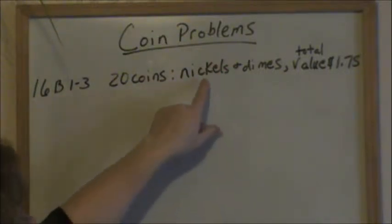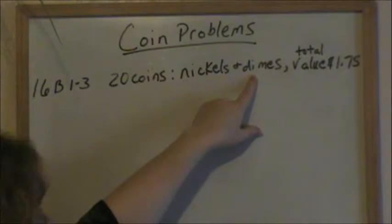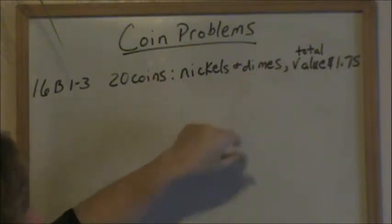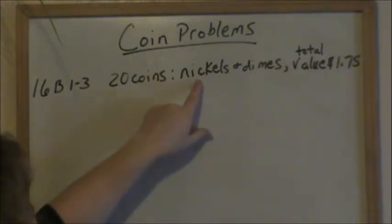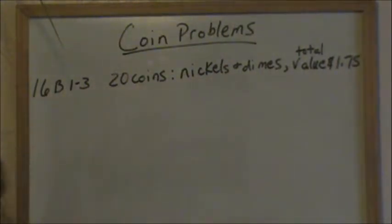Since we have two unknowns, how many equations do we have to have to solve two unknowns? We have to have two. So if there are two unknowns, you have to have two equations.